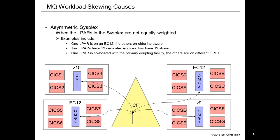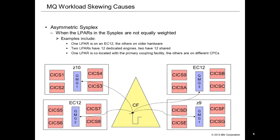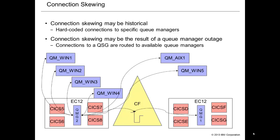Other examples include two LPARs with different numbers of engines — some dedicated, some shared — where the dedicated usually gets priority. You can also have a situation where an LPAR is co-located with the primary coupling facility used by your applications, which means it gets much better response time from that coupling facility and therefore processes more of the workload.